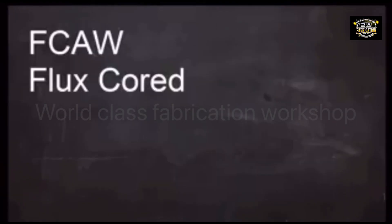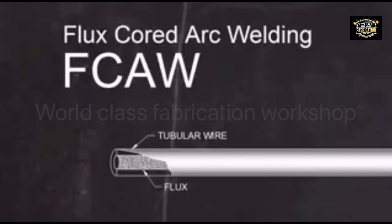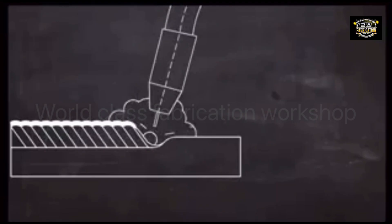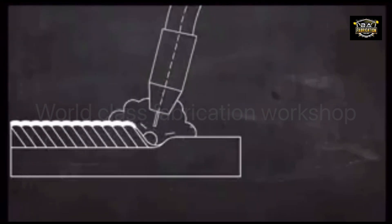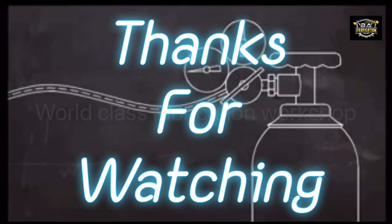So, in summary, flux-core is an electric arc welding process that uses a consumable tubular wire electrode that contains flux material on the inside of it. Filler material is added to the weld automatically as the wire electrode melts. In self-shielded flux-core, the weld is protected by the flux itself. And in gas-shielded flux-core, the shielding gas comes from a high-pressure cylinder.